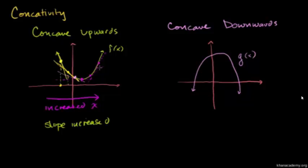Over the concave upward curve, the slope went from very negative, became less negative — becoming less negative is the same thing as increasing — then even less negative, then completely flat at zero, and then became positive, more positive, and even more positive. So the entire time, our slope is increasing.